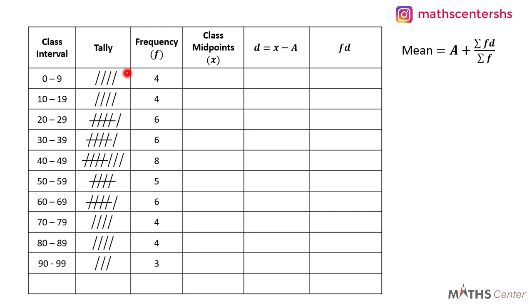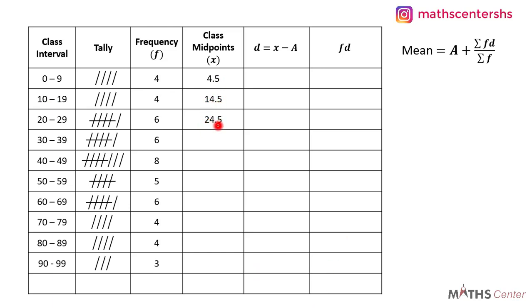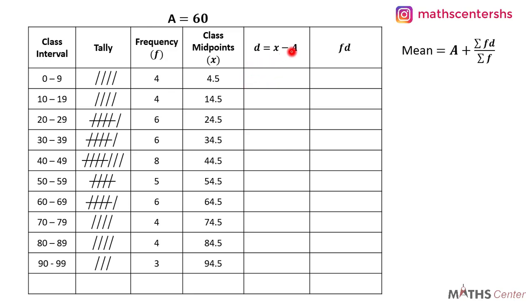For the first interval, 0 plus 9 divided by 2 gives 4.5. Then 14.5, 24.5, and 30 plus 39 divided by 2 gives 34.5. The next ones are 44.5, 54.5, 64.5, 74.5, 84.5, and 94.5. These give us all the x values. Now we can find the deviation using an assumed mean of 60 — we subtract 60 from each x value.